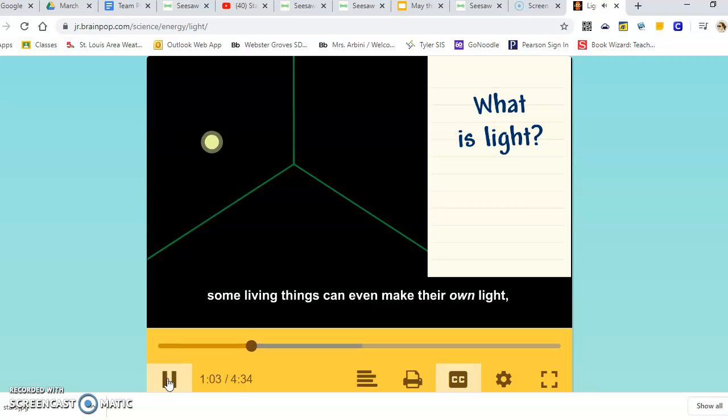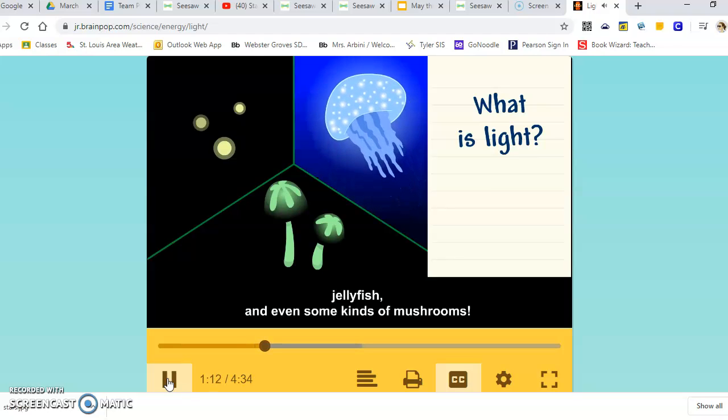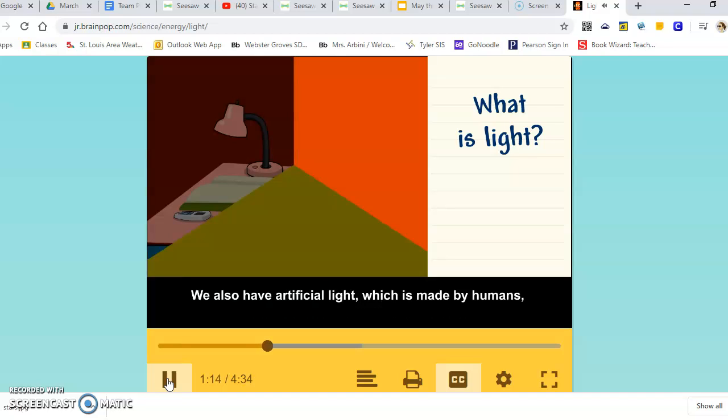Some living things can even make their own light, like fireflies, jellyfish, and even some kinds of mushrooms. We also have artificial light,